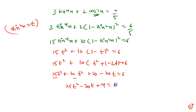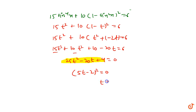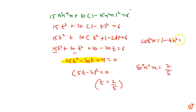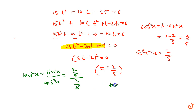We recognize this as a perfect square: (5t − 2)² = 0, giving t = 2/5. Since t = sin²x, we have sin²x = 2/5. Then cos²x = 1 − 2/5 = 3/5. And tan²x = sin²x / cos²x = (2/5) / (3/5) = 2/3.